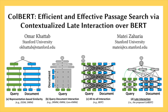ColBERT uses a summation of maximum similarity, or max-sim, operations for late interaction. Essentially, it finds the maximum cosine similarity between each query embedding and all document embeddings. This allows for efficient pruning, as we only need to consider the most similar document embeddings for each query term.